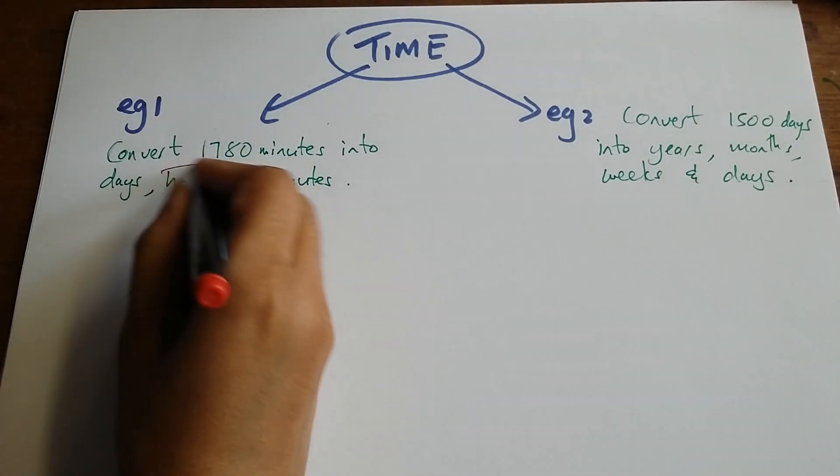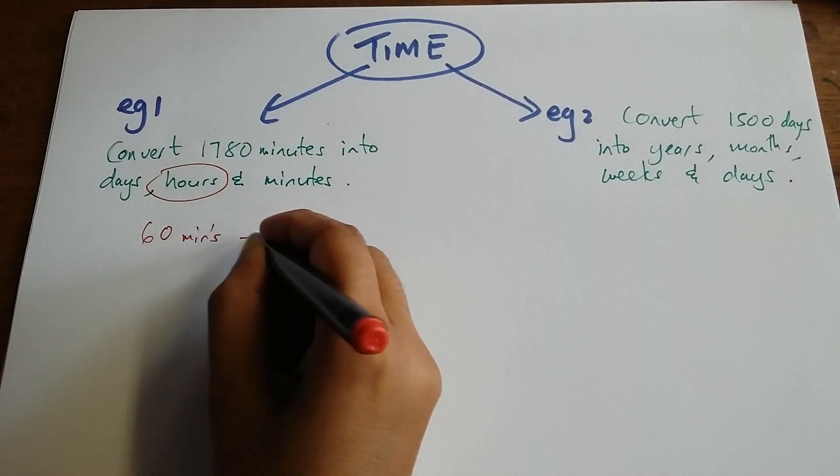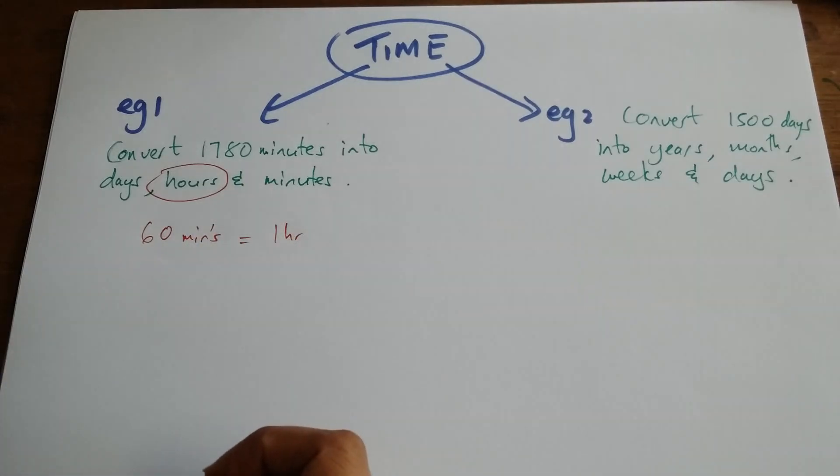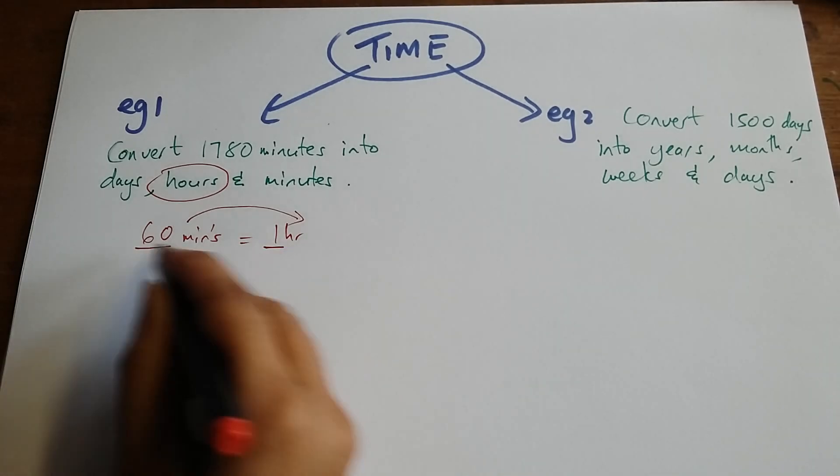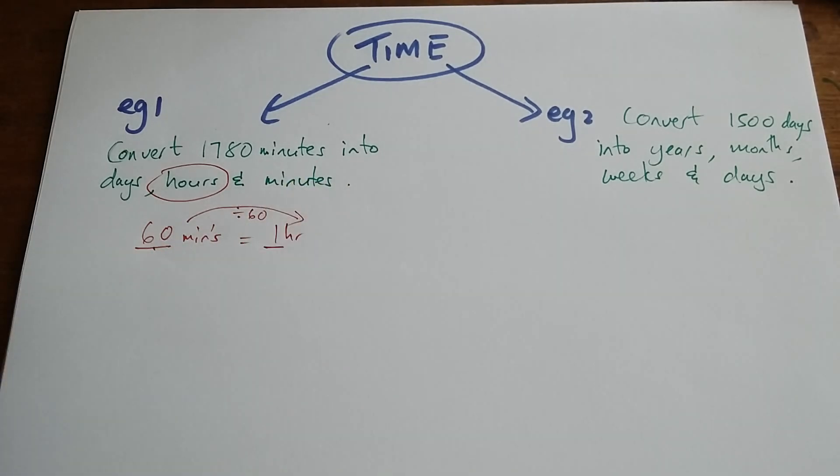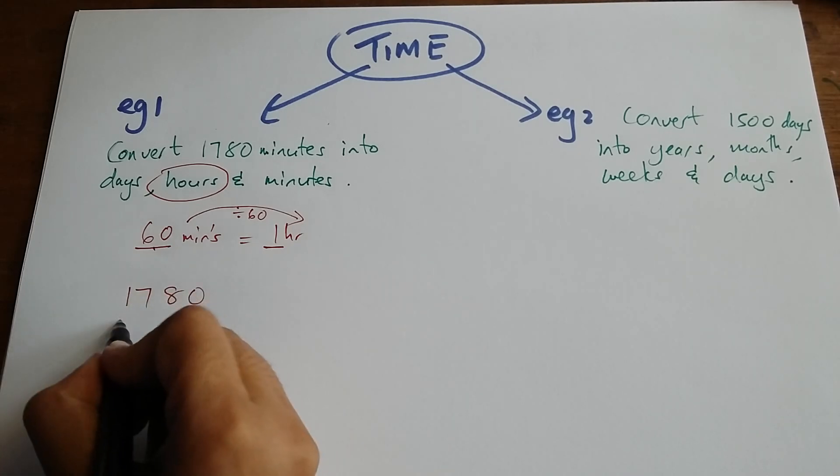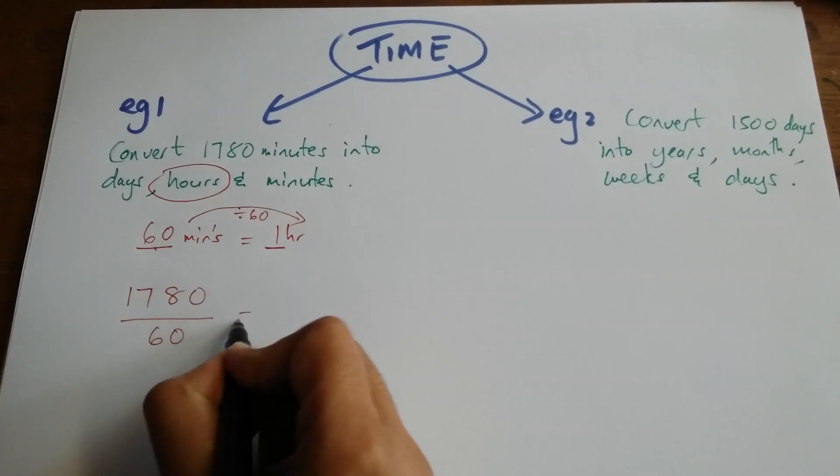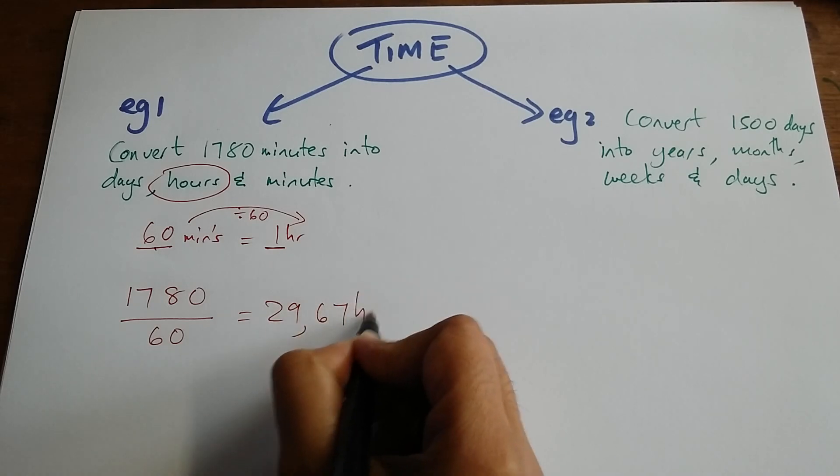So we'll start with hours. I know that 60 minutes is equivalent to 1 hour. When I convert from hours into minutes, I divide by 60. So I'm going to start 1780 divided by 60, which gives me 29.67 hours.